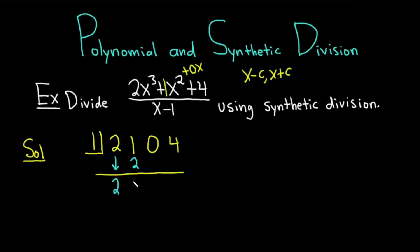3 times 1 is 3. And then you add 0 + 3 is 3. 3 times 1 is 3. And then you add 4 + 3 is 7. And then you put a little bracket here to identify that this is actually your remainder.